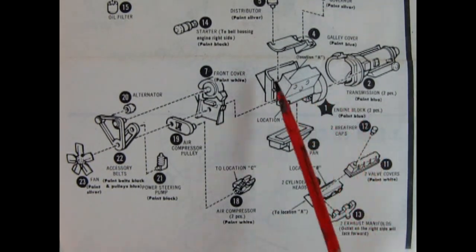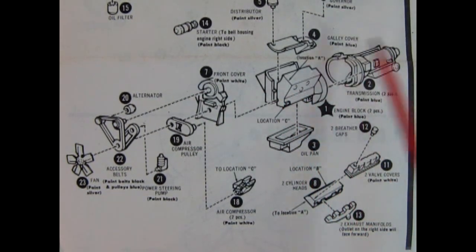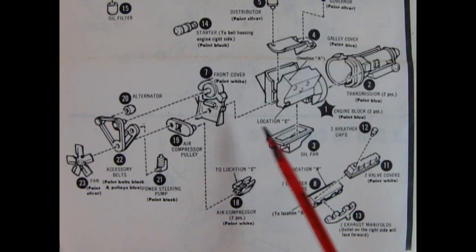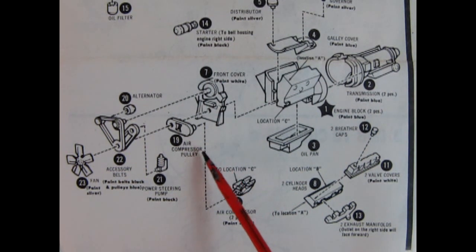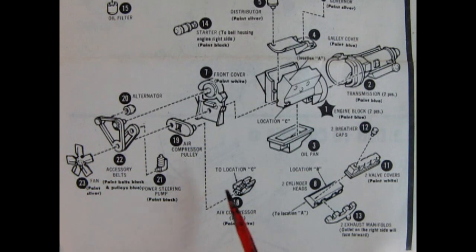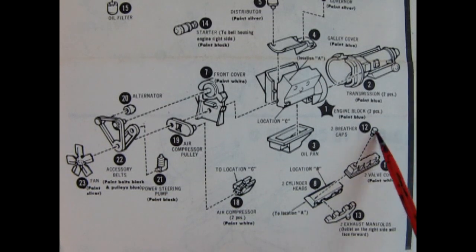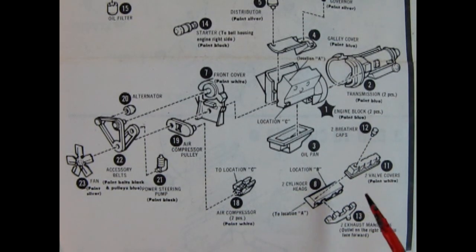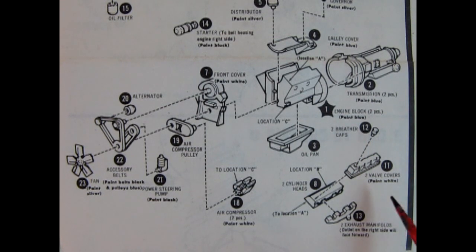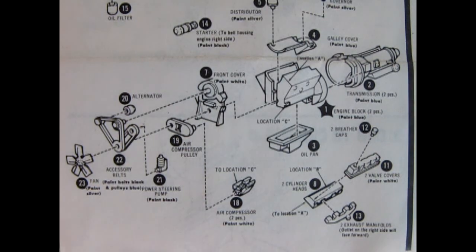And here we have our two piece engine block. We also have the galley cover, two piece transmission, oil pan, front cover, air compressor pulley, alternator, our accessory belts and pulleys, the fan, the power steering pump, and then we have our air compressor down here. And then this part you build up twice, once for right hand side and left hand side. We have two oil breather caps, two valve covers, two cylinder heads, and two exhaust manifolds.